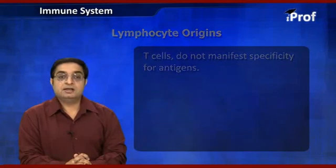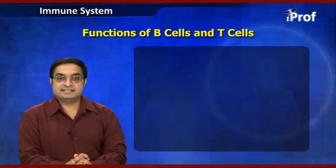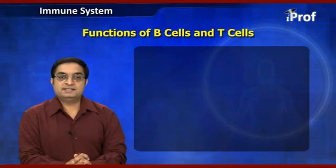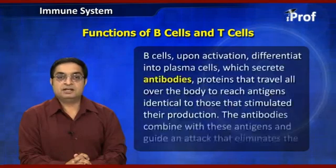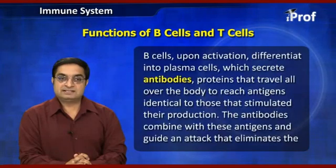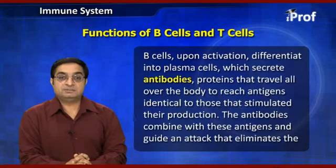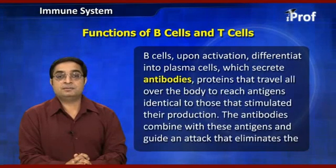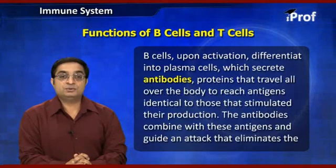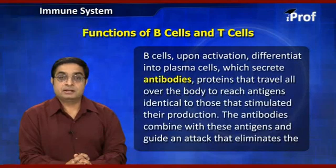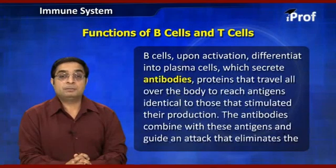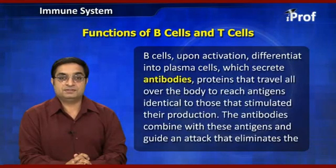B cells upon activation differentiate into plasma cells which secrete antibodies — proteins that travel all over the body to reach antigens identical to those that stimulated their production. Plasma B cells are also called cartwheel cells because their nucleus resembles the wheel of a cart, and are also called antibody factories.